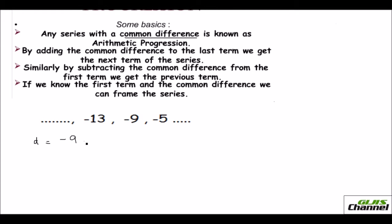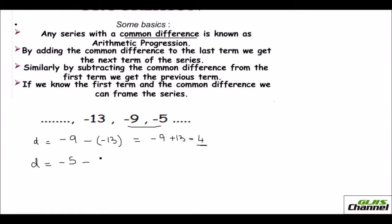The second term minus the first term: that is negative 9 minus negative 13, which is negative 9 plus 13, giving us 4. So the common difference is positive 4. Let me check for the next two terms: negative 5 minus negative 9, that is minus 5 plus 9, which is again 4. Since the common difference is the same, I can say that this is an arithmetic progression with D equal to positive 4.